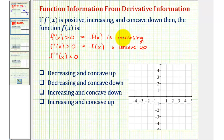We now know that f of x is increasing and concave up, and therefore our selection should be this last option: increasing and concave up.